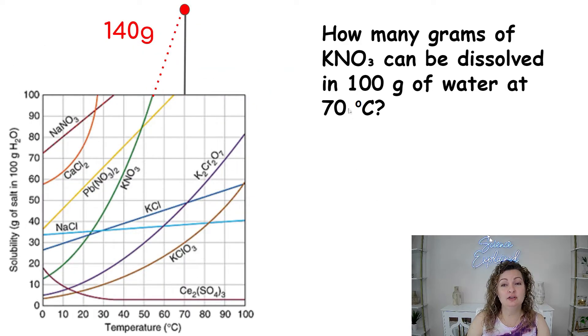So we have to first start by looking at KNO3. There's lots of lines going on in this graph, so we only want to look at one at a time. This green line is what we are going to be referring to here. Notice it says it can be dissolved in 100 grams of water. You guys do not look for 100 grams on this chart. That's not what it's talking about.